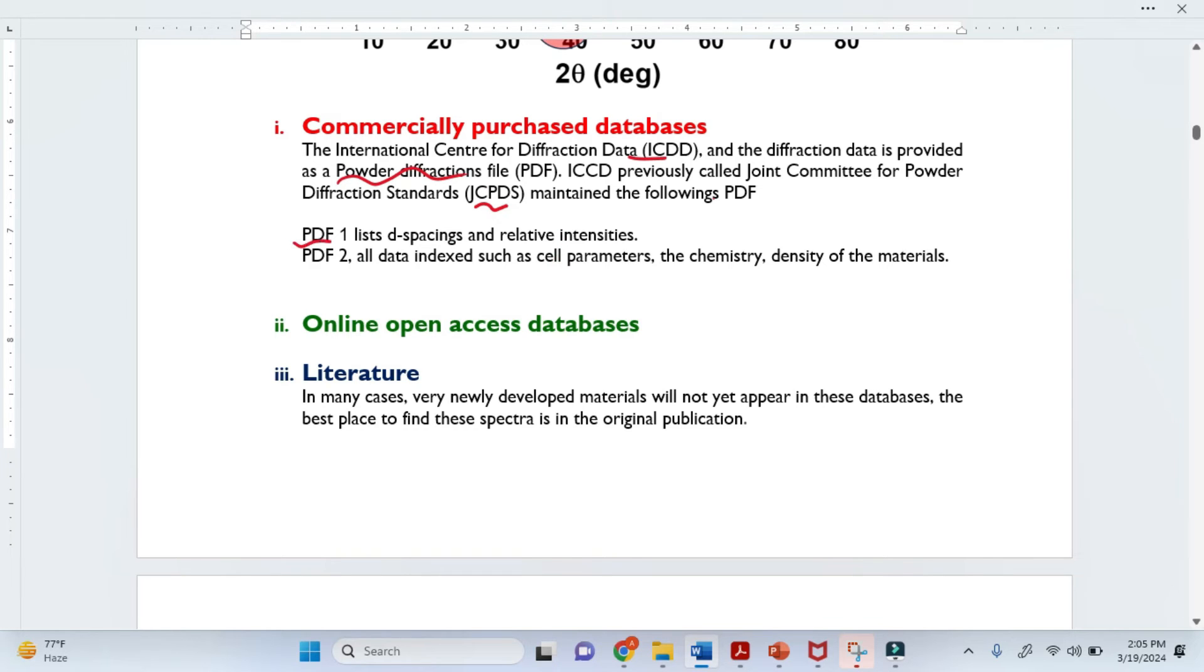They basically maintain the powder diffraction files for all organic and inorganic materials. For example, this is the PDF1 file. They list the d-spacing and relative intensity of thousands of elements or materials. We just compare with their relative intensity and peak positions. The peak position and d-spacing are basically related with each other through theta. We know that theta is sine inverse of lambda by 2d from Bragg's equation. So the d-spacing and the peak position are basically the same thing.